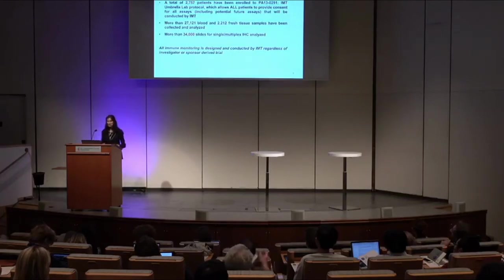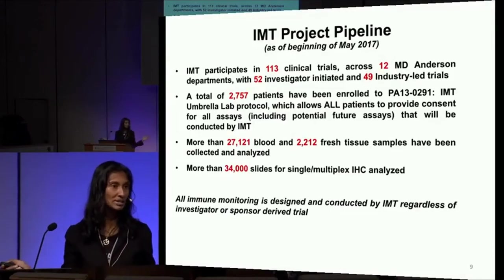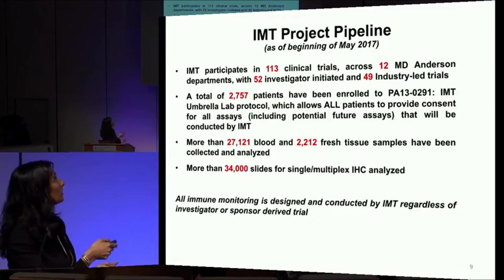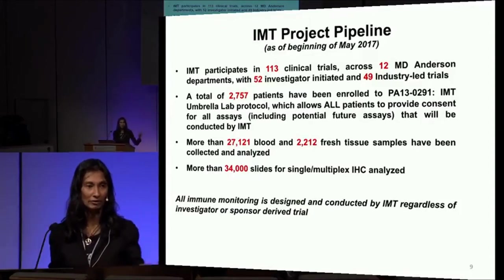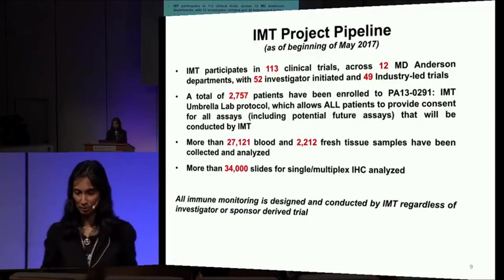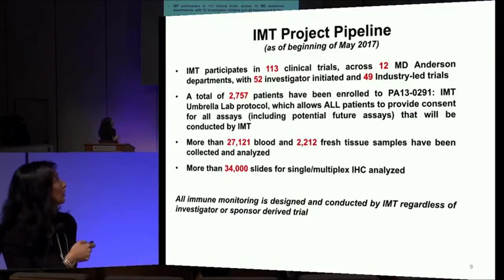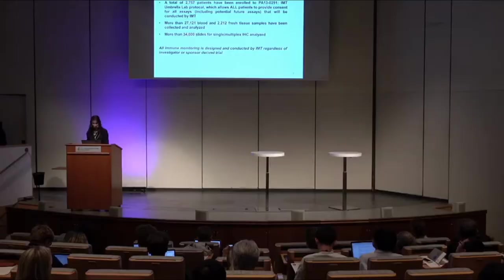As of May 2017, the platform has been around for three years. We have about 113 clinical trials across 12 departments with 52 investigator-administrated studies and 49 industry-led studies. We've consented 2,757 patients, all with appropriate informed consent and clinical data, under an umbrella protocol. This allows us to do anything we want to the samples — it's not defined by any of the 113 trials. We've analyzed about 27,000 blood samples, 2,000 fresh tissue samples, and about 34,000 archival samples.